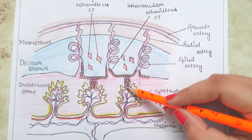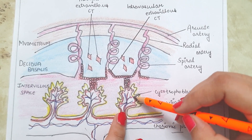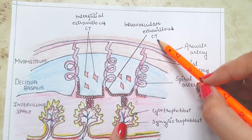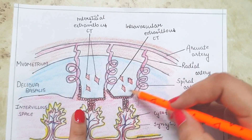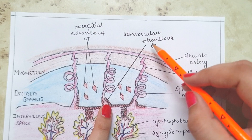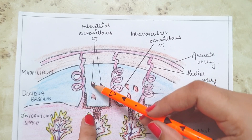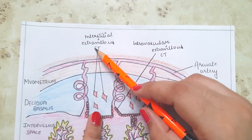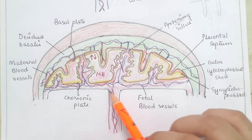The cytotrophoblast cells present inside the villi are known as villous cytotrophoblast cells, while those lying outside the villi are known as extravillous cytotrophoblast cells. There are two types: interstitial extravillous cytotrophoblast cells, which invade into the decidua basalis.